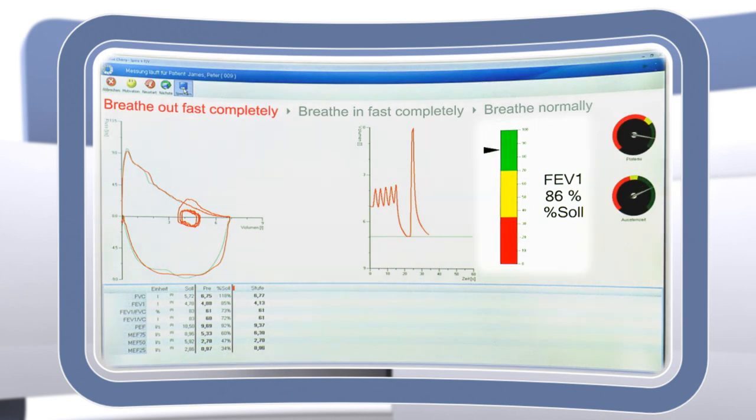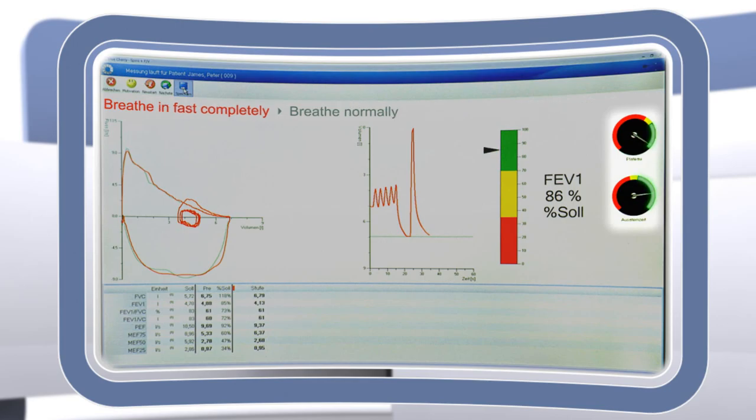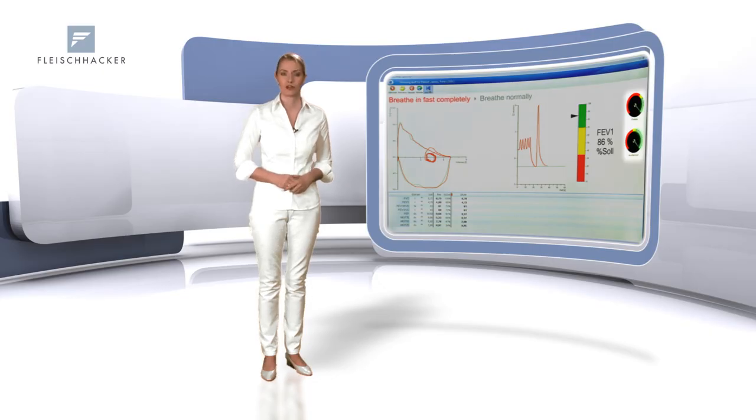That's the forced expiratory volume in the first second, compared to the target value. Test quality can be controlled with both tachometers for plateau and expiration time.